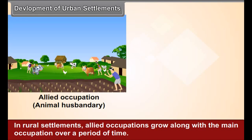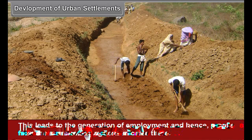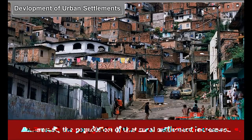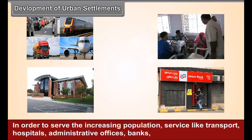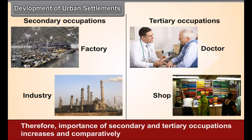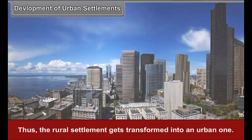Development of Urban Settlements: In rural settlements, allied occupations grow along with the main occupation over a period of time. This leads to the generation of employment, and hence people from the surrounding regions migrate there. As a result, the population of that rural settlement increases. In order to serve the increasing population, services like transport, hospitals, administrative offices, banks, markets, hotels, shops, communication, etc. are provided. Therefore, the importance of secondary and tertiary occupations increases and, comparatively, the proportion of the original primary occupations decreases. Thus, the rural settlement gets transformed into an urban one.